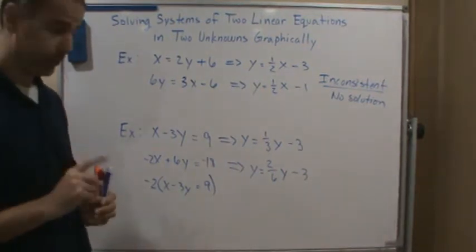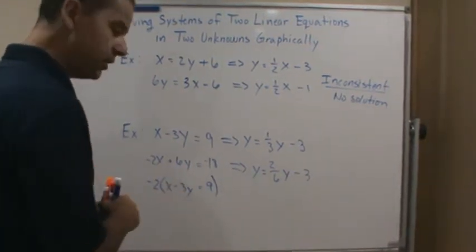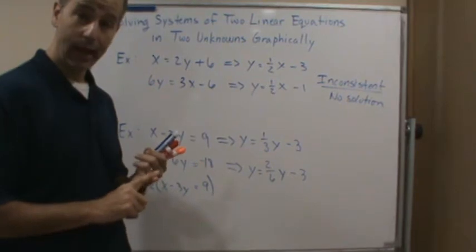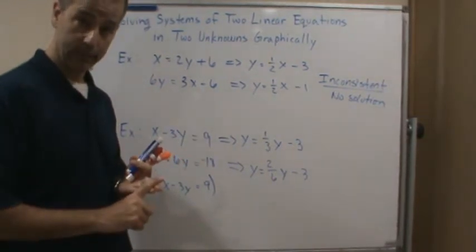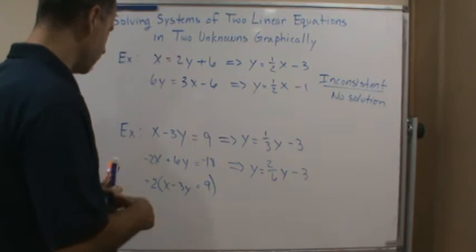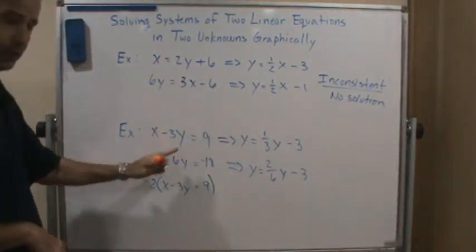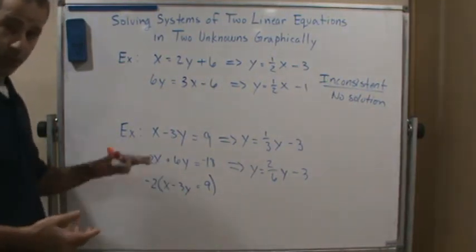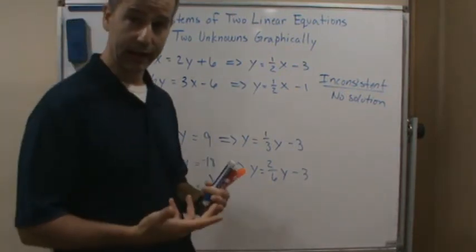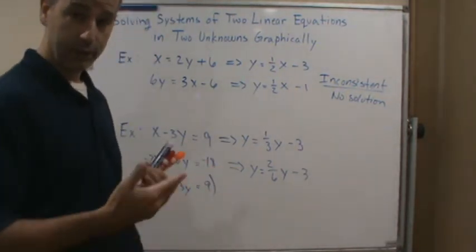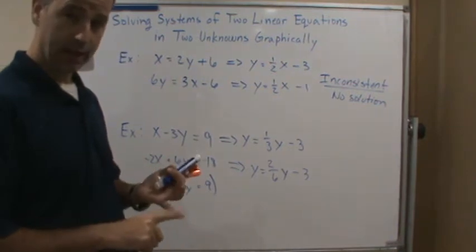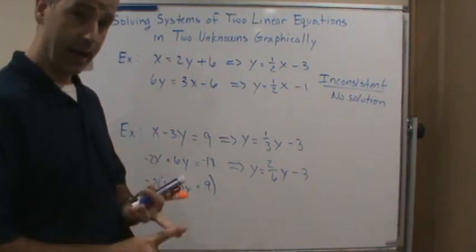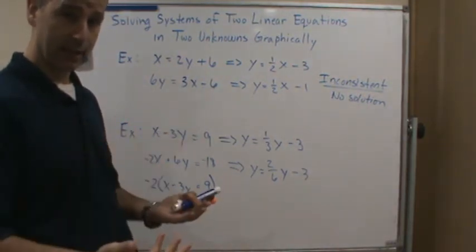Another way of confirming they're the same line is to plot some points — specifically the x and y intercepts and then a third test point. If you do that, all three points will be on both lines. And if that happens for two straight lines — the y-intercepts are the same, the x-intercepts are the same, and a test point is also on both lines — then they have to be the same line.